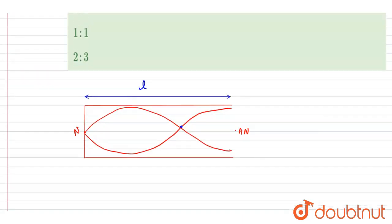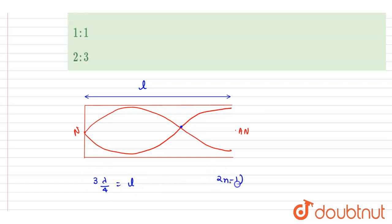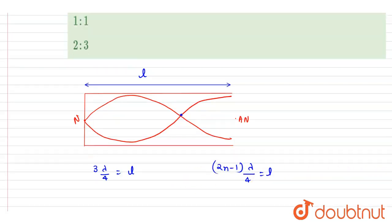As already stated, odd multiples of λ/4 will form. For the first overtone, 3λ/4 = l. The general expression is (2n−1)λ/4 = l. For the first harmonic, put n = 1; for the second harmonic, n = 2, and so on.